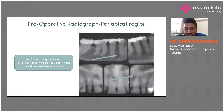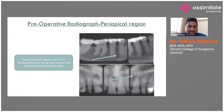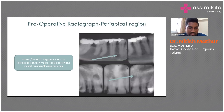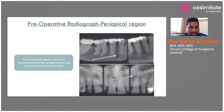The mental foramen and the incisive foramen are two anatomical structures that always mimic a periapical lesion. Changing the horizontal angulation mesially or distally will change their radiographic location, allowing us to visualize the root apex clearly and differentiate them. We need to change the horizontal angulation to confirm.